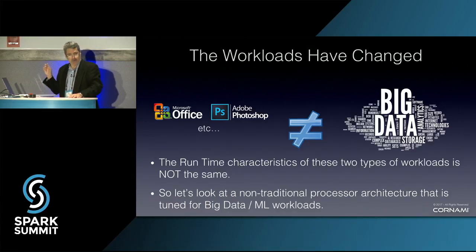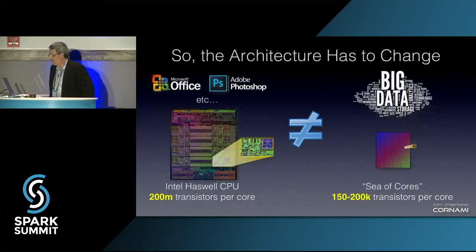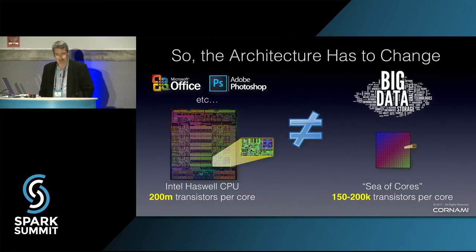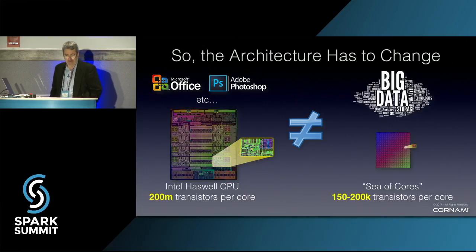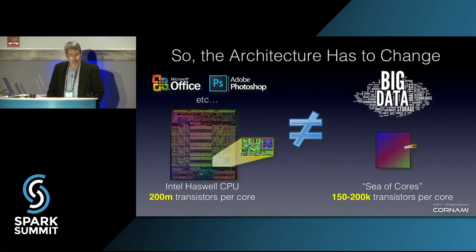However, our workloads are different. We're not running 100 million lines of code, or even a million — we're probably running code bases on the order of thousands of lines of code. There's been a fundamental change in the scale of the workloads we're processing. So what happens if we change the architecture to match the workloads? Rather than tossing 200 million transistors at the problem to get one processor — you can get 32 or 34 of those on an expensive Intel die — why don't we put a sea of cores where each core is in the hundreds of thousands of transistors? That's a 1000x difference, meaning we can put far more small processors on a die.